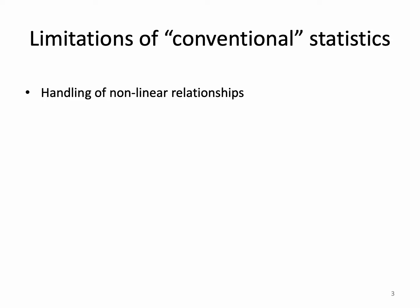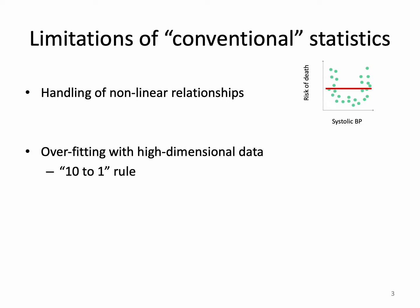So what are some limitations of conventional statistics? The first is handling of nonlinear relationships. Here's a graph: the risk of death goes up if your blood pressure is really low or really high. But with linear regression, the line of best fit would say there's no relationship between systolic blood pressure and risk of death, which of course is incorrect.